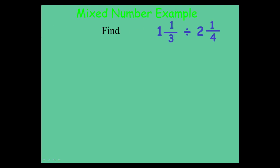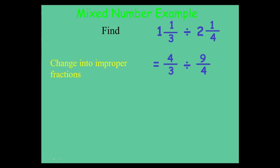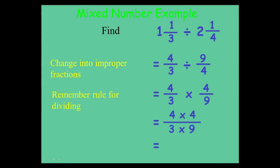When you have a calculation involving mixed numbers and you're being asked to divide, what you need to do is convert each of these to a top heavy fraction, or an improper fraction. So you end up with 4 over 3 divided by 9 over 4. To get the new numerator: 1 times 3 is 3, add the 1, you get 4. Over here, 2 fours are 8, add the 1, you get 9. So now that you've got 4 thirds divided by 9 over 4, rewrite that as a multiplication: 4 over 3 times 4 over 9. You end up with 16 on the top, 27 on the bottom.